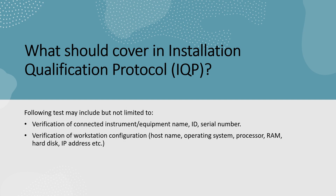Second is verification of workstation configuration — we need to verify the PC-related configuration. For example, host name, which is some identification number of the PC; operating system, such as Windows 10 or other; processor, like Intel Core or other. Next is RAM capacity and hard disk capacity — we need to verify these, as well as the IP address of the system.